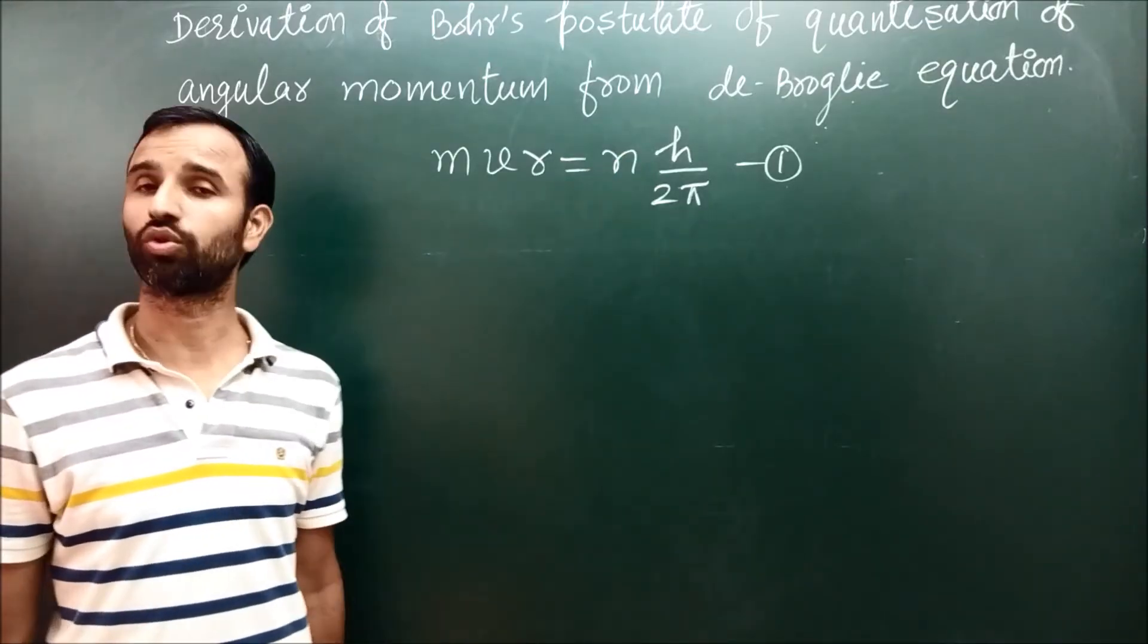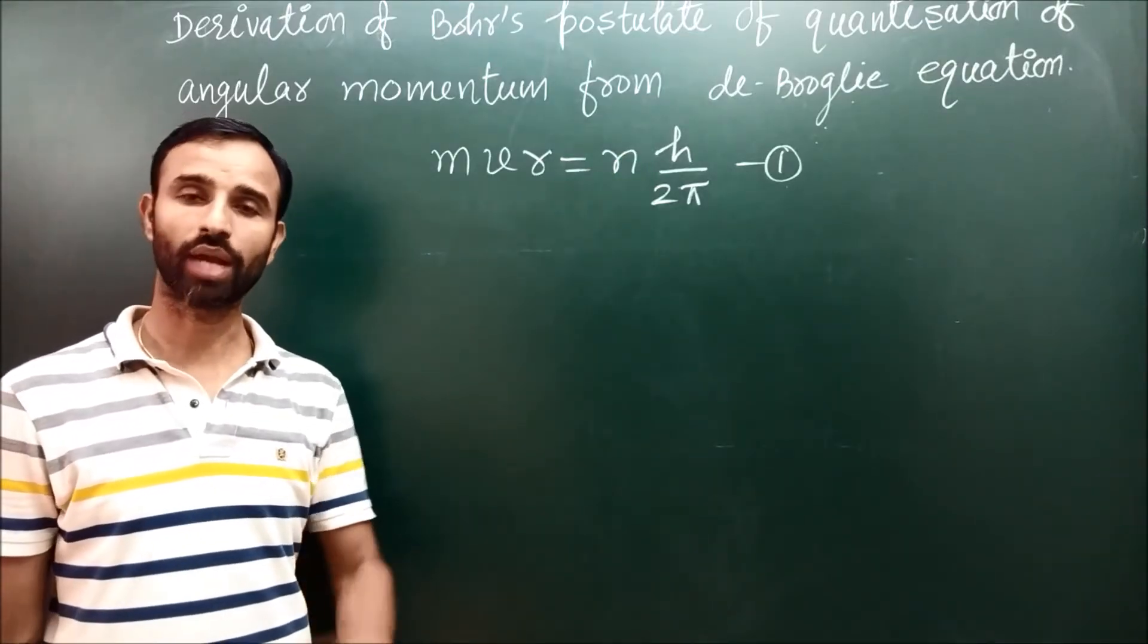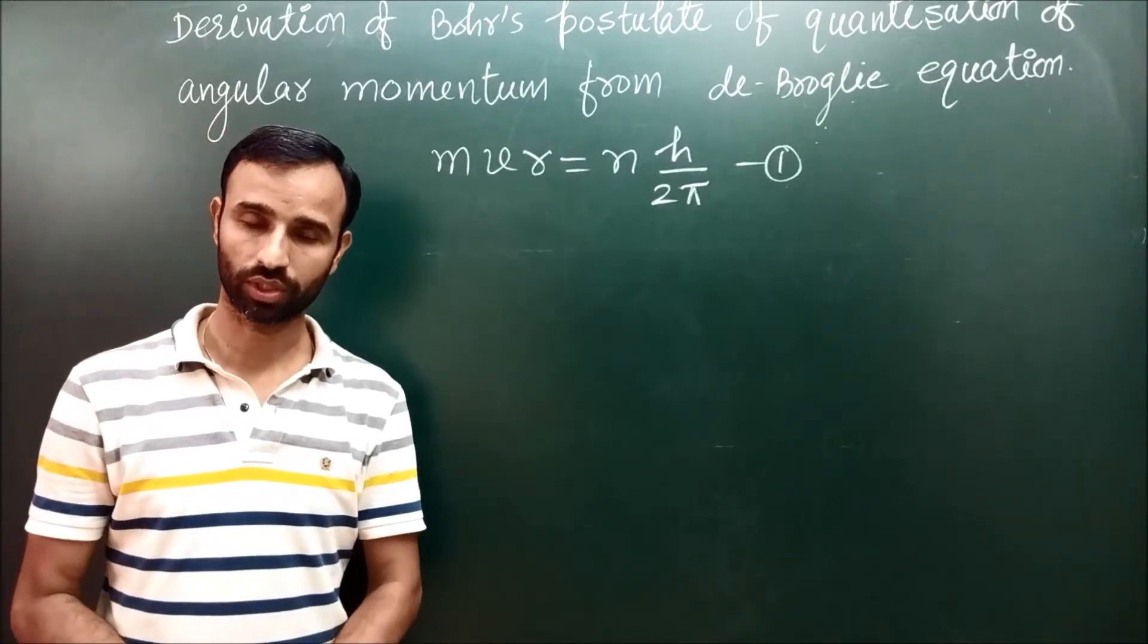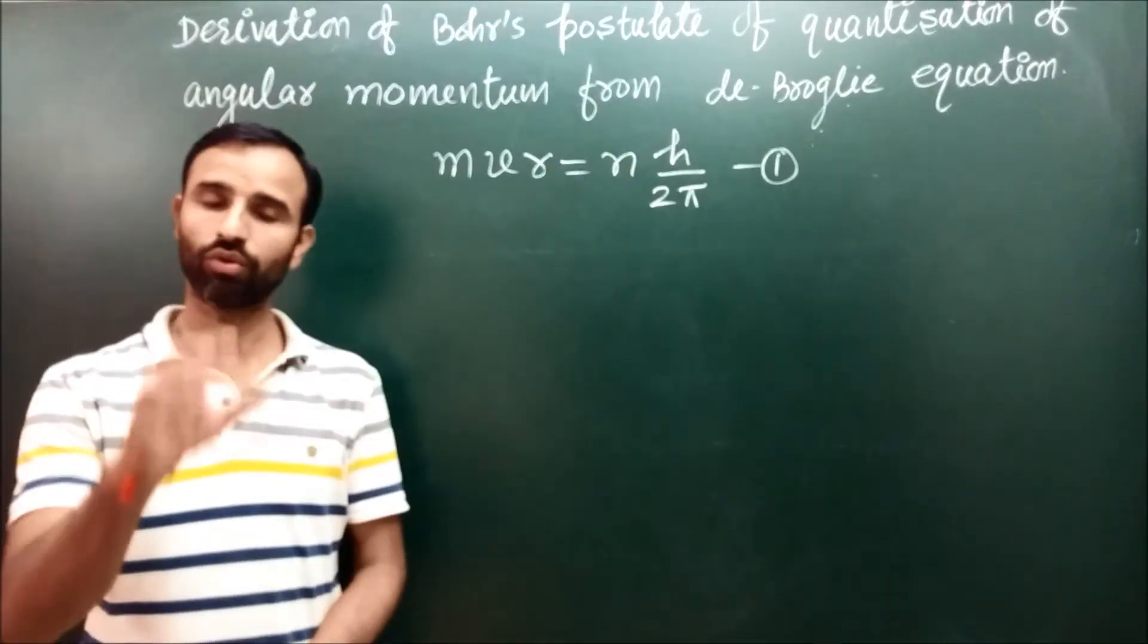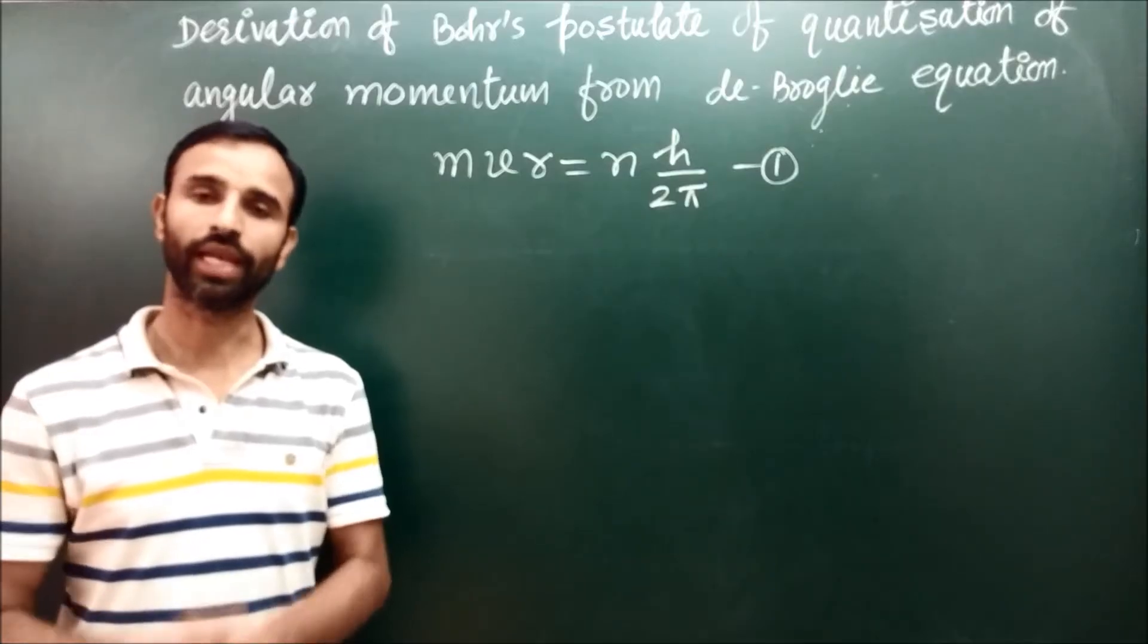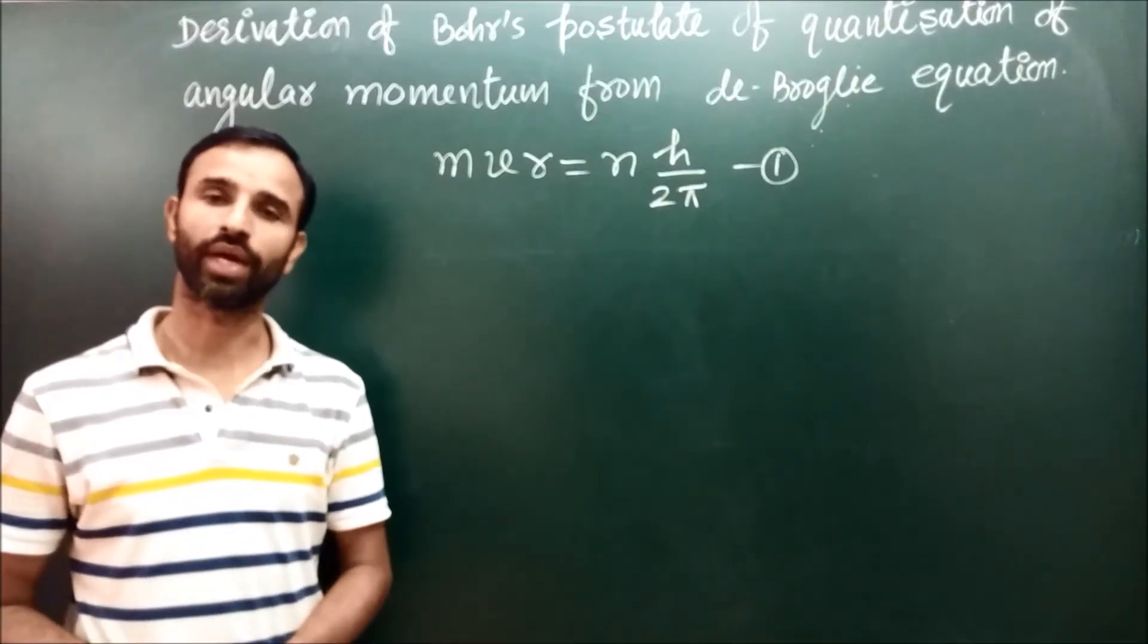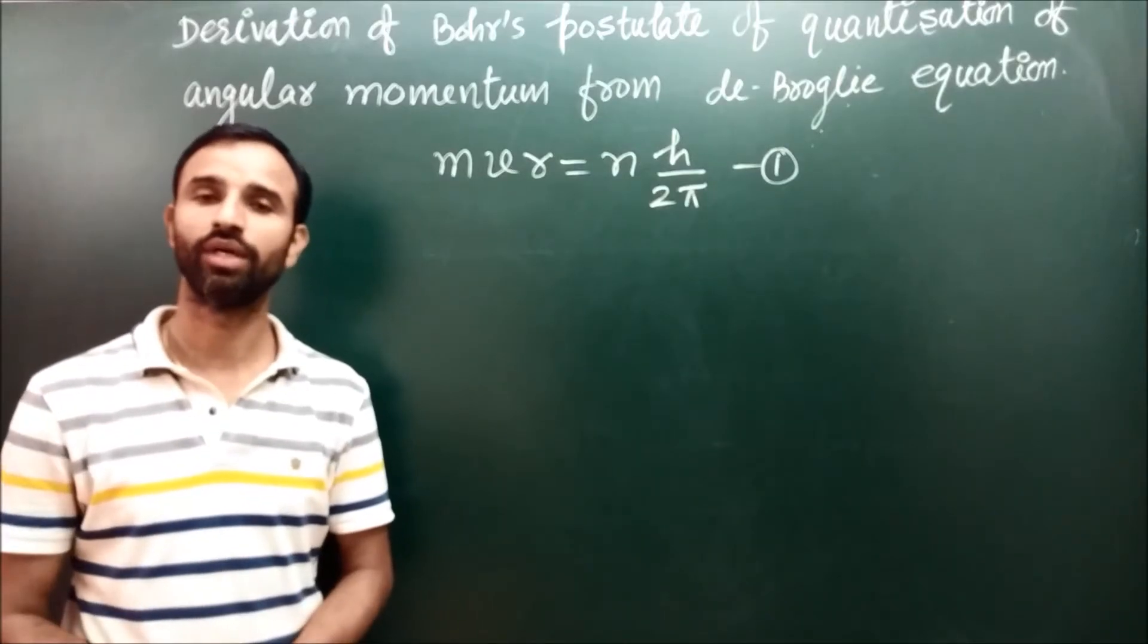This postulate of Bohr can be derived from de Broglie equation. We know, according to de Broglie, electron can behave as a particle as well as wave.